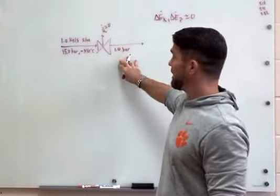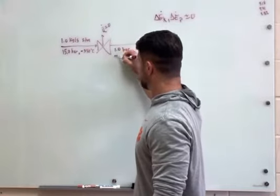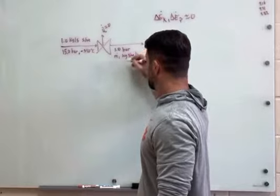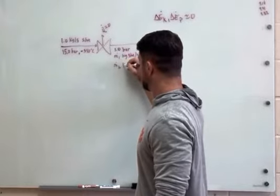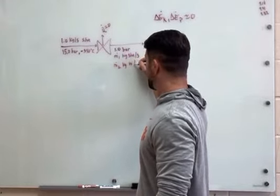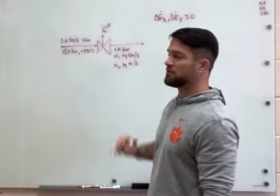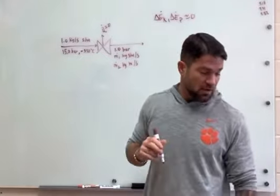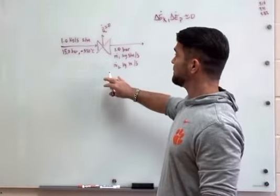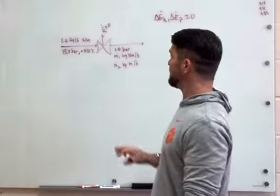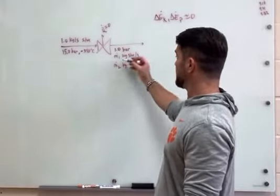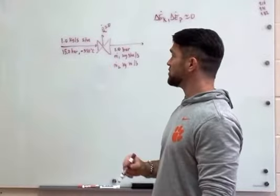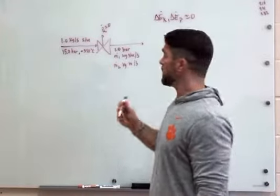We don't necessarily know what's coming out of this process, so I'm going to call this M1 kilograms of steam per second and then call this M2 kilograms of water per second. And then we know that M1 plus M2 is going to equal 1. So we need to go ahead and draw and label our process. We have the steam coming out, the water coming out, possibly steam coming in. We know the conditions, so we can go ahead and put our energy balance together.